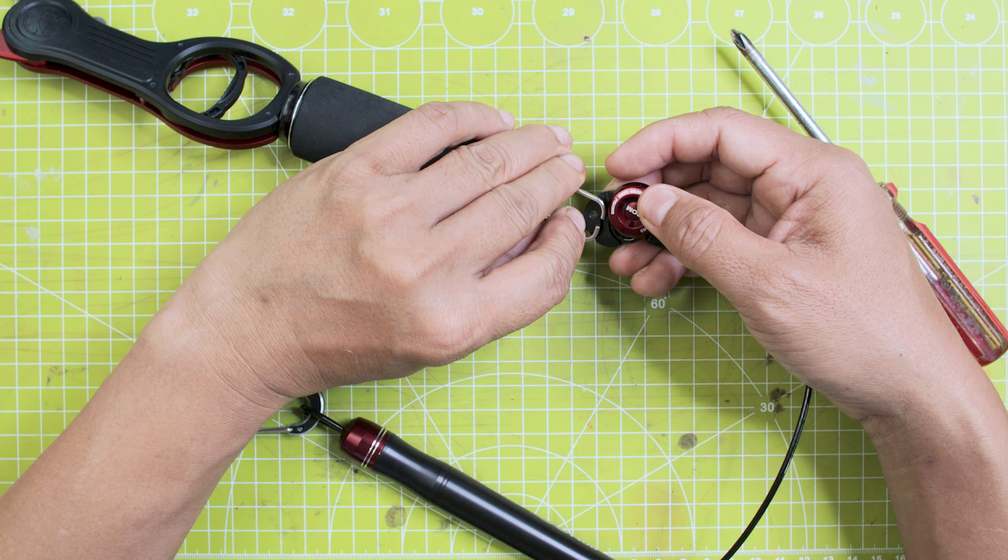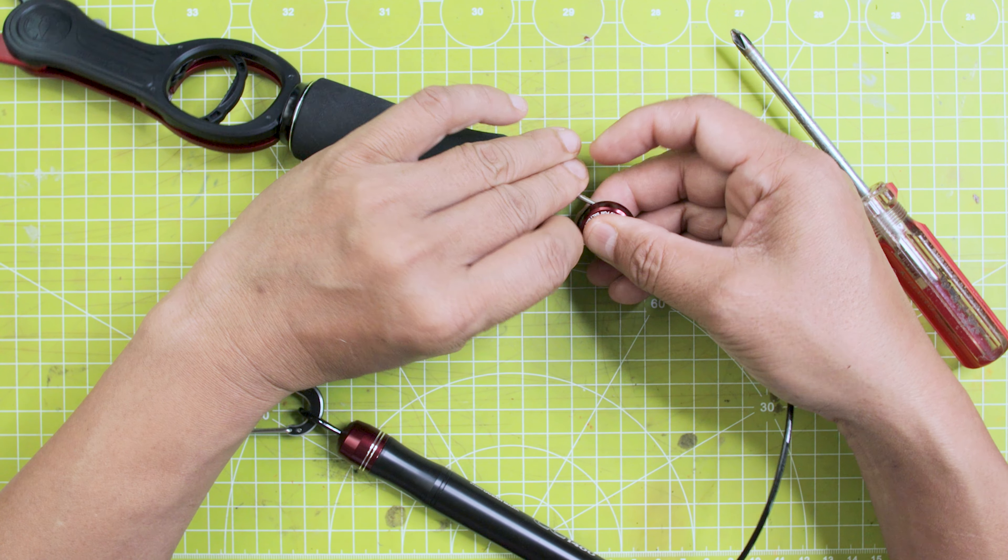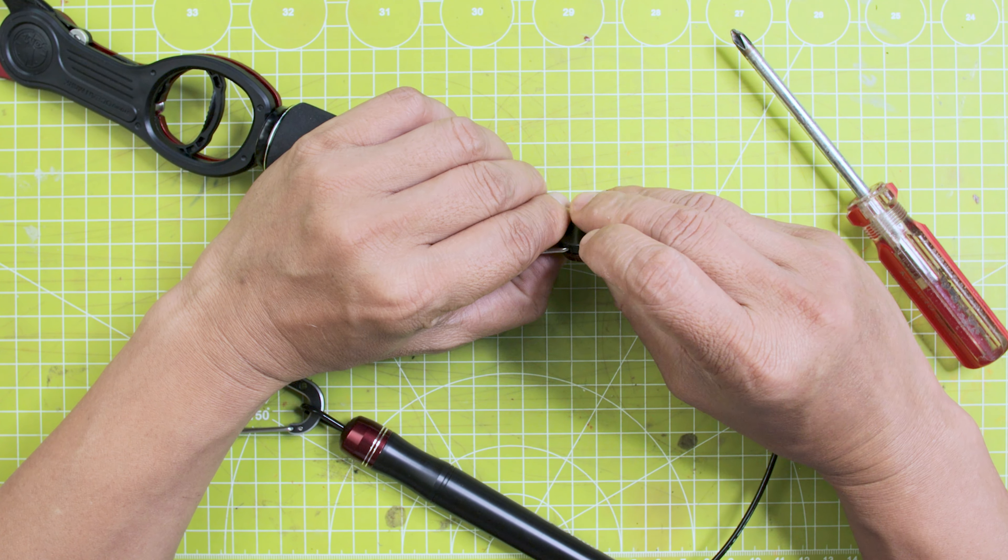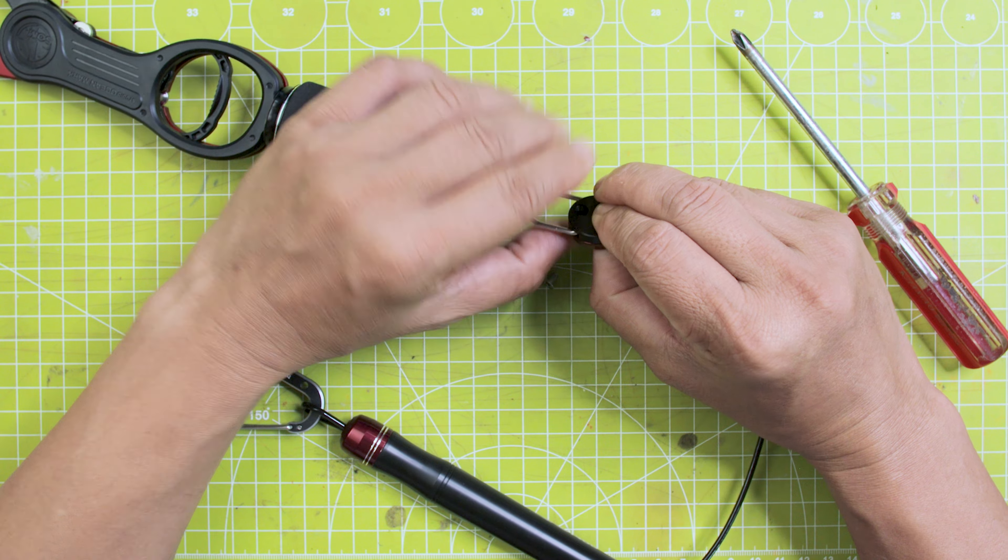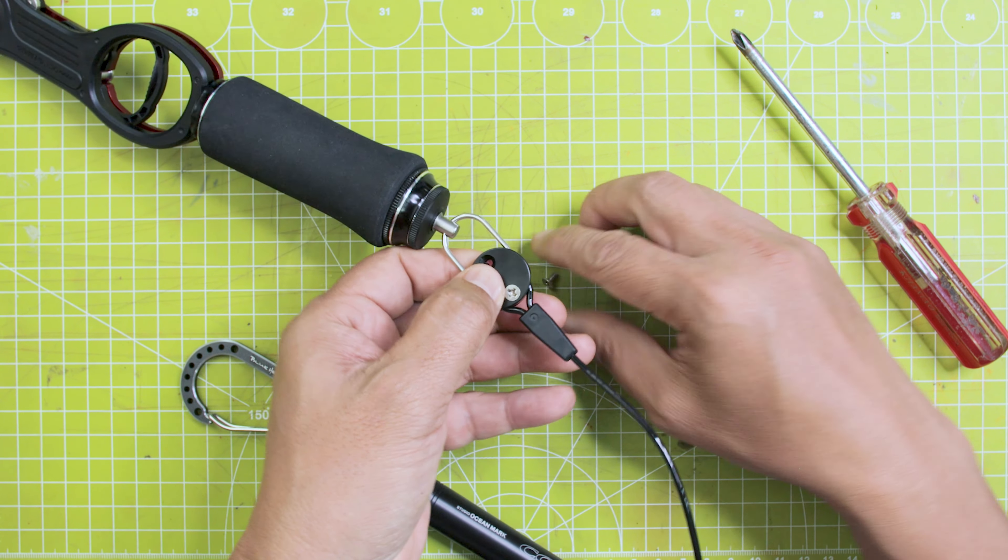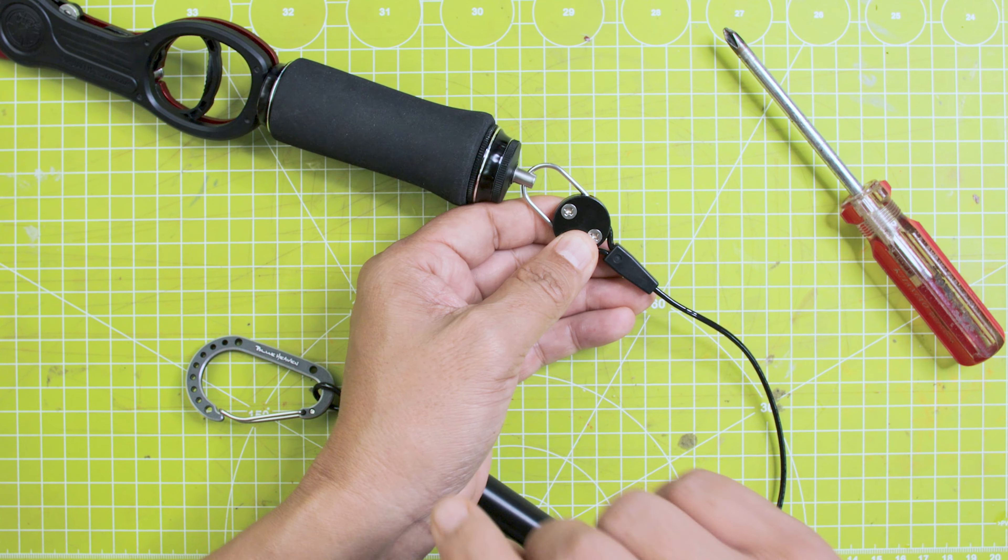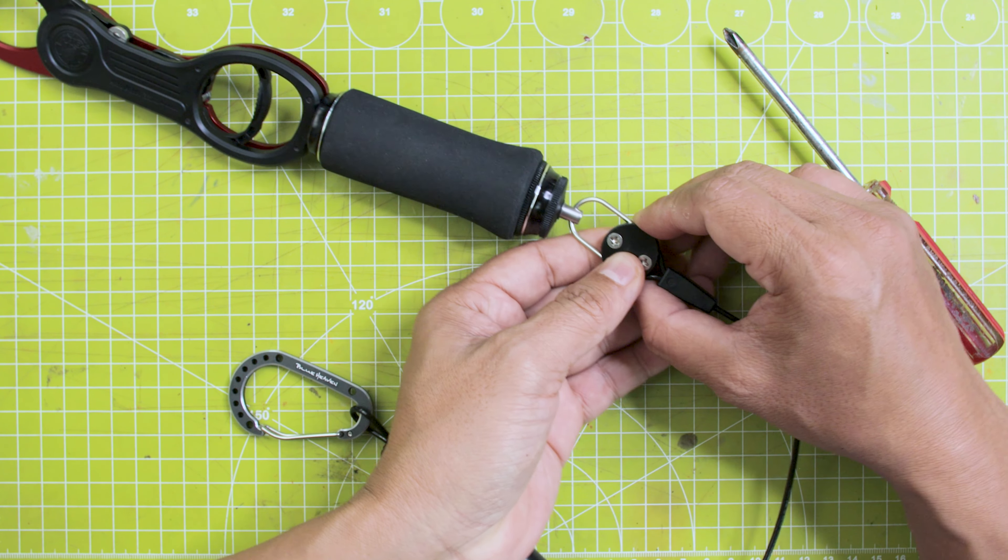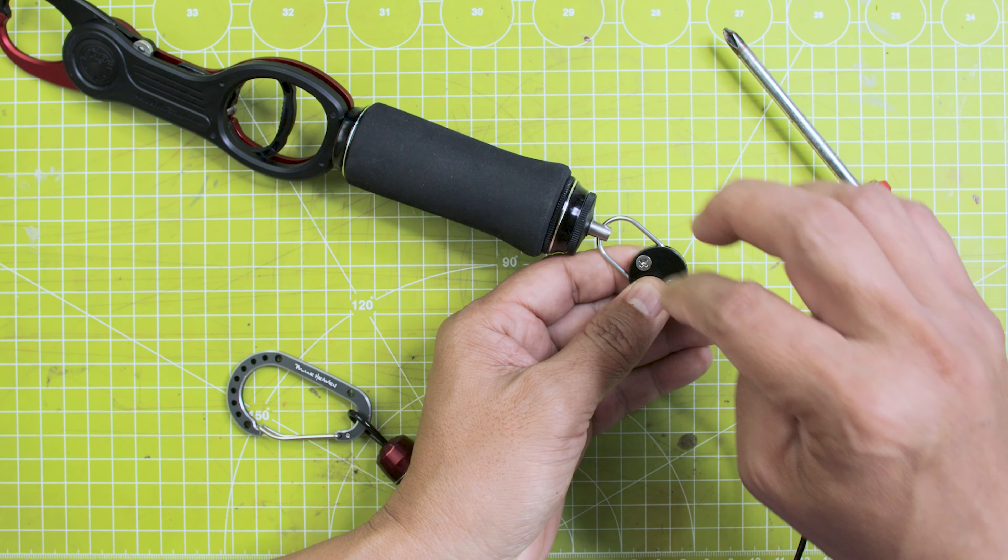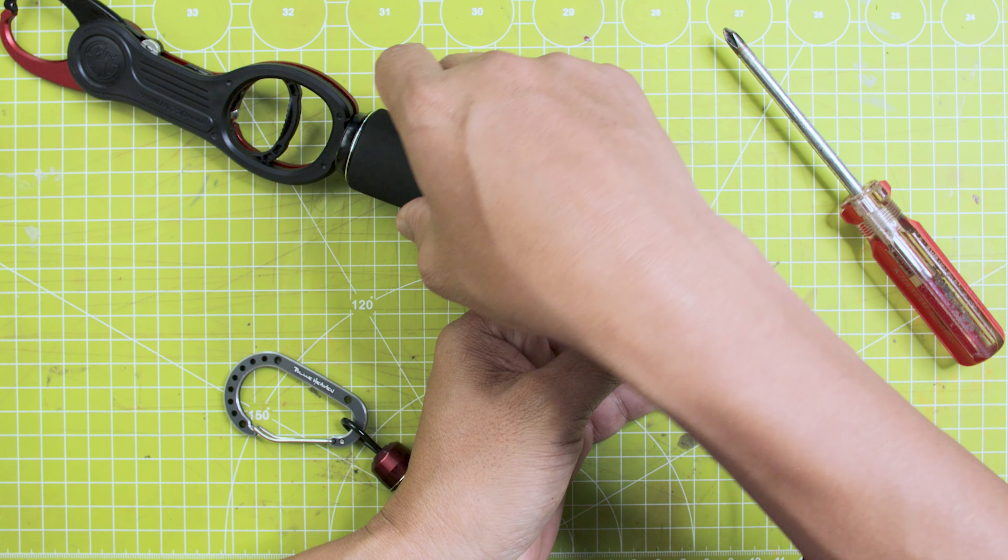By the way, if you're new to the channel, this channel talks about the how's and why's of fishing. I cover everything from big game, ultralight, everything in between, including fly fishing. And today, I'm setting this fish grip from Studio Ocean Mark so that you can see how it's done, or at least how I do it.